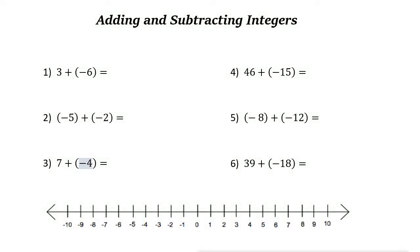Adding and subtracting integers. Integers are whole numbers — negative, positive, and zero. To add two integers, let's take a look at the first example: 3 plus negative 6.